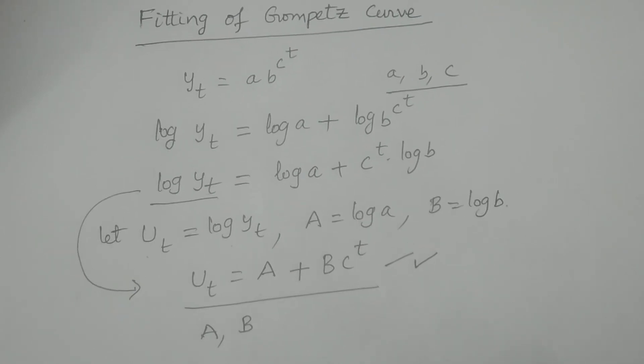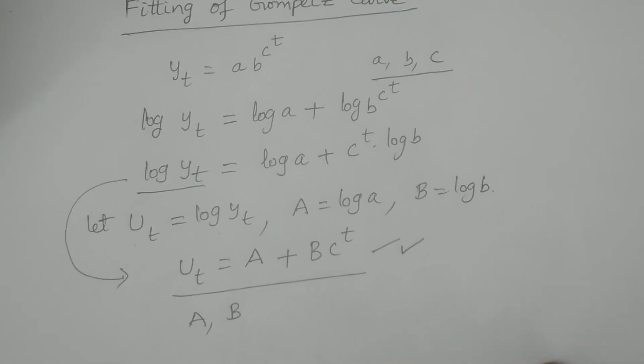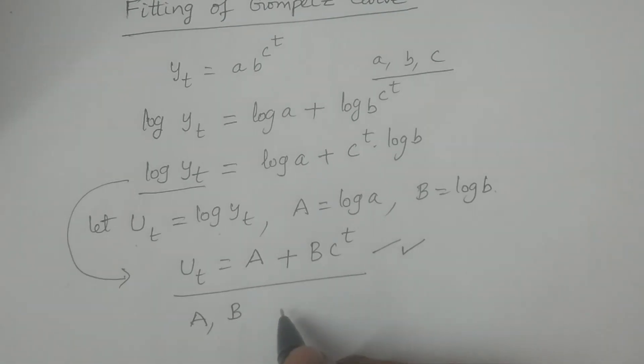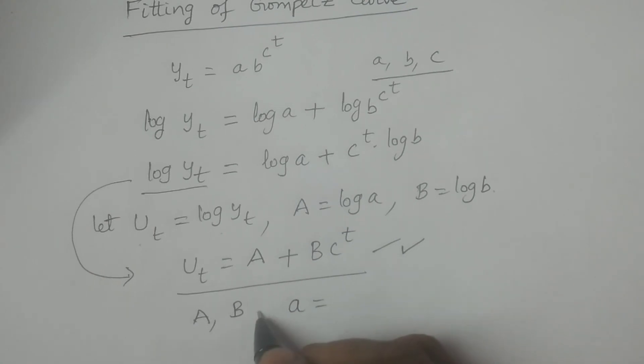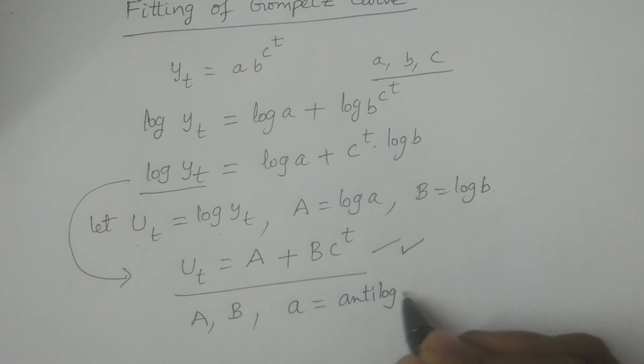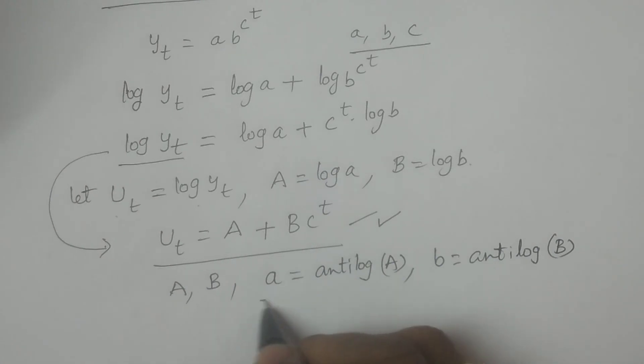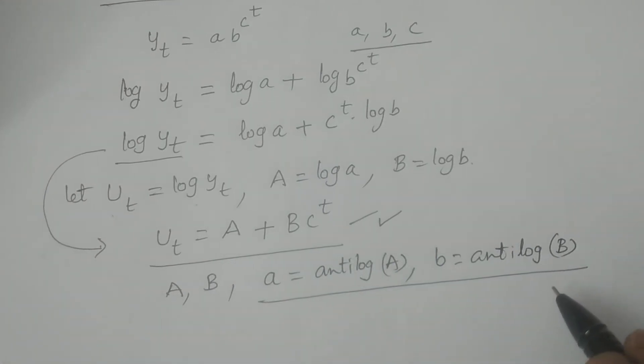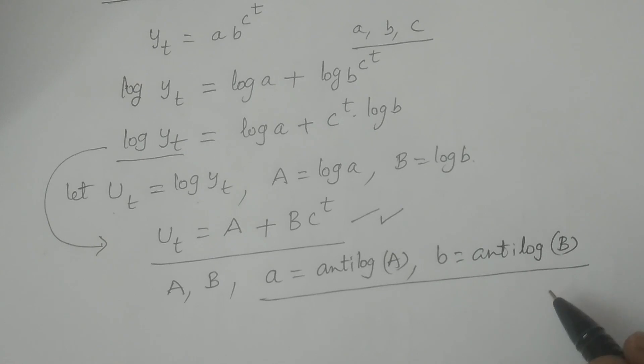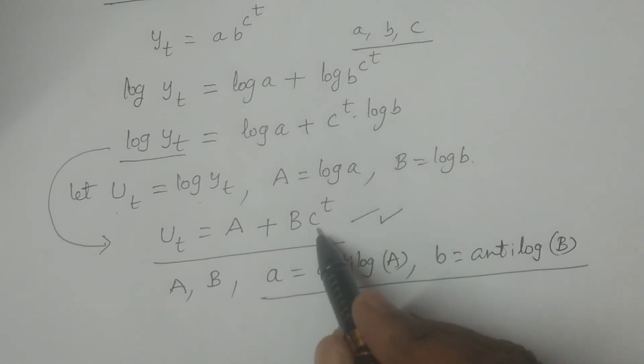Thereafter, we calculate the small a. Small a is equal to antilog of capital A. And similarly, small b is equal to antilog of capital B. We calculate small a and small b like this. And so the small c is as it is, the same value we have obtained from the modified exponential curve.